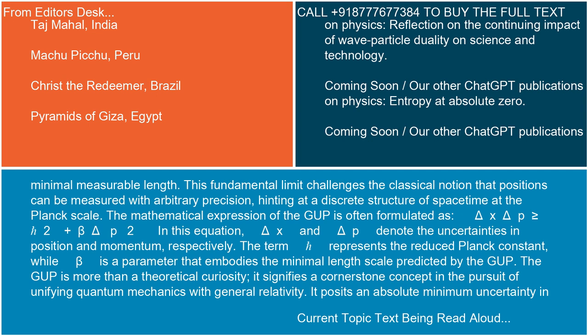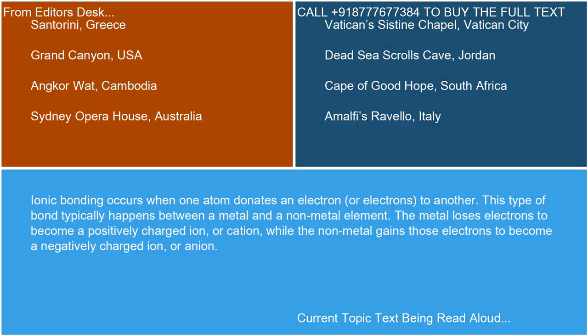Ionic bonding occurs when one atom donates an electron or electrons to another. This type of bond typically happens between a metal and a non-metal element. The metal loses electrons to become a positively charged ion or cation, while the non-metal gains those electrons to become a negatively charged ion or anion.